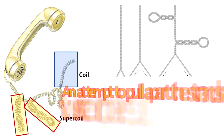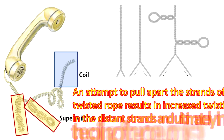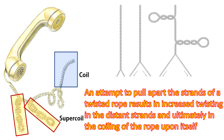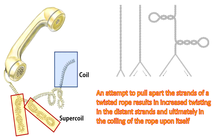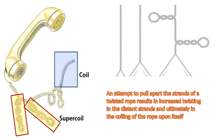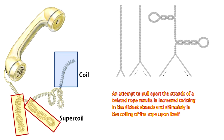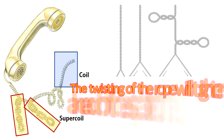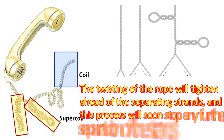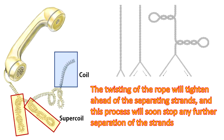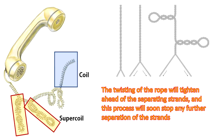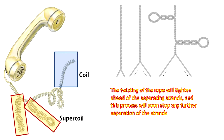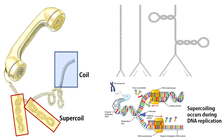An attempt to pull apart the strands of a twisted rope results in increased twisting in the distant strands and ultimately in the coiling of the rope upon itself. The twisting of the rope will tighten ahead of the separating strands, and this process will soon stop any further separation of the strands. Something like this happens during DNA replication when DNA polymerase enzymes pull apart the double helix.